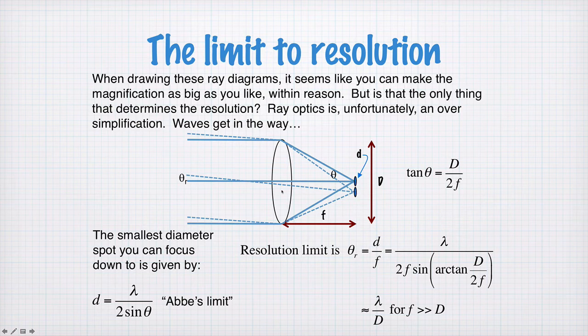And then the distance from this spot to the lens is f, the focal length. And we have this angle here, theta r, which is the same as this angle here, theta r. So the tan of theta r will be d divided by f. That's going to be a very small angle. So we write tan theta r is approximately equal to theta r. And we get theta r equal to d over f.